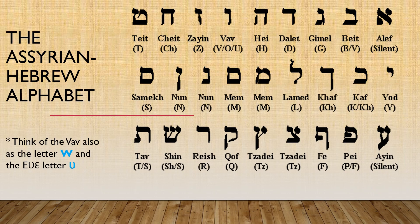Here we have the Assyrian Aramaic Hebrew alphabet. This is the alphabet without vowels. It's different from the Masoretic text, which has dots and bars to indicate vowels. I'll read it from right to left. Let me find my pointer and I'll read and show you.